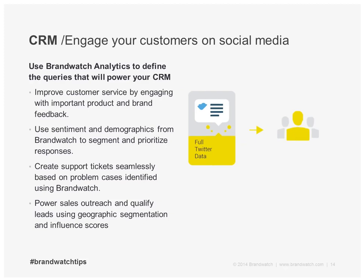You now have the ability using the Brandwatch API to build an integration to a CRM system to get Twitter data in there and use it natively. For instance, you could use this for customer service — listening to feedback on your product or brand, then using sentiment, demographics, and other features to segment and prioritize that data, file it into your CRM system, and prioritize how you make responses. The same can happen for customer support, creating support tickets seamlessly, or for sales outreach and lead qualification using geographic segmentation or influence scores to route inbound leads to the right people.